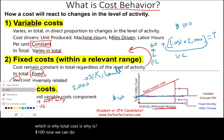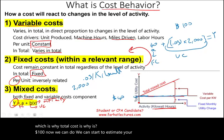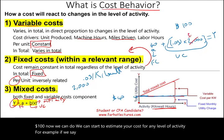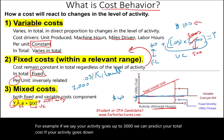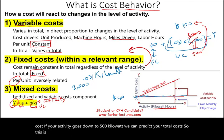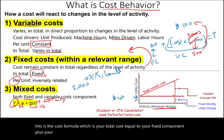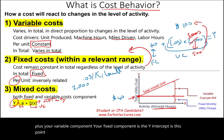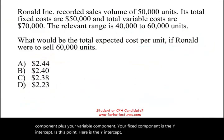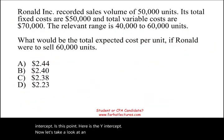Now we can start to estimate your cost for any level of activity. If your activity goes up to 3,000 kilowatts, we can predict your total cost. If your activity drops to 500 kilowatts, we can predict your total cost. This is the cost formula: total cost equals the fixed component plus the variable component, where the fixed component is the Y-intercept on the graph.